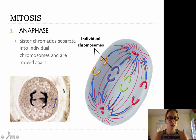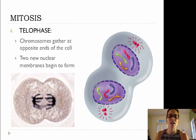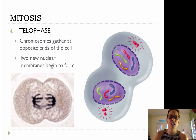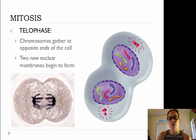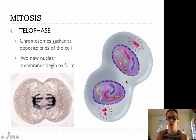Once anaphase has taken place, we'll then move on to telophase. In telophase, the chromosomes are going to gather at opposite ends of the cell, they're going to slowly begin to relax and unwind back into chromatin, and two new nuclear membranes are going to begin to form.